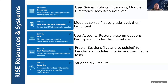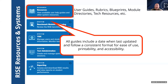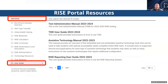Moving on to the RISE portal — here's a quick overview. There are five different tabs to choose from. We're going to start with Resources, which houses the tech resources, helpful user guides like the TIDE User Guide, the Test Administration Manual, and the RISE Reporting Guide. To find these, select the user guide folder under Browse. There are also other available resources such as the benchmark module directory, writing rubrics, and blueprints.